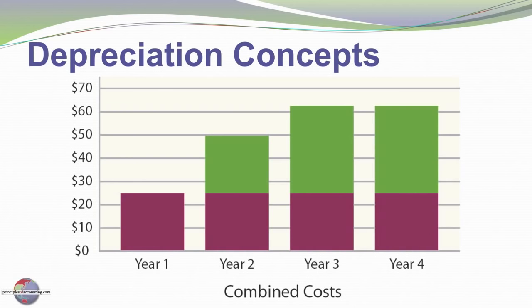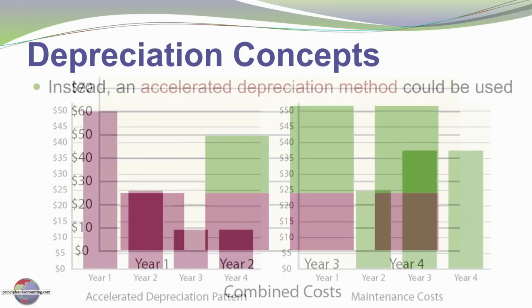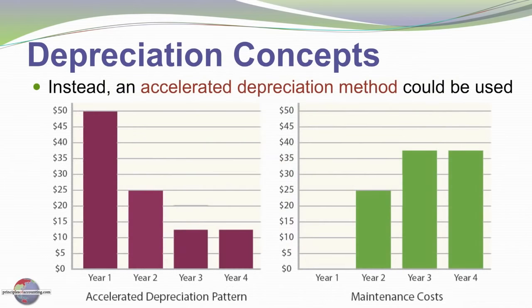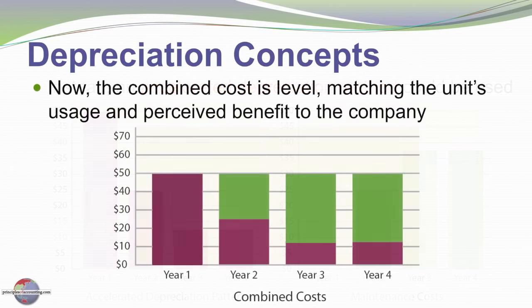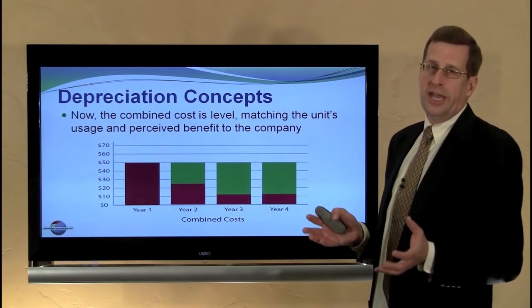Is that logical? Well, it may be, but it may not be. If we instead use an accelerated depreciation method — taking more depreciation in earlier years and less in later years — when we couple that with maintenance costs and look at the combined picture, we might actually have a more uniform recognition of costs through an accelerated depreciation method.